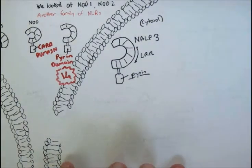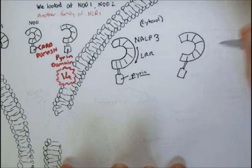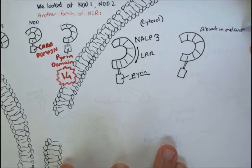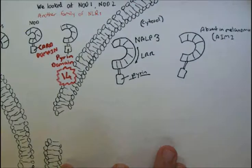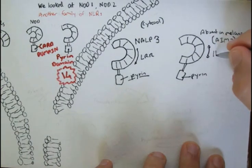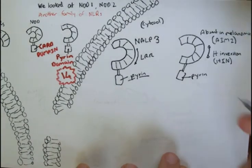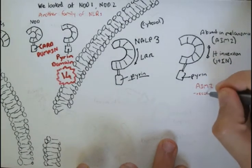Another NLR is the absent in melanoma receptor, or AIM2. It also has the pyrin lower domain, but instead of the LRR domain in the body, it has an H inversion domain, or HIN. The AIM2 receptor recognizes double-stranded DNA of a pathogen.